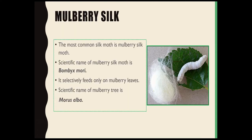Mulberry silk is obtained from the silk moth called the mulberry silk moth, scientifically known as Bombyx mori. This particular silk moth will eat only mulberry leaves and nothing else, which is why it has been named the mulberry silk moth. The scientific name of the mulberry tree is Morus alba.